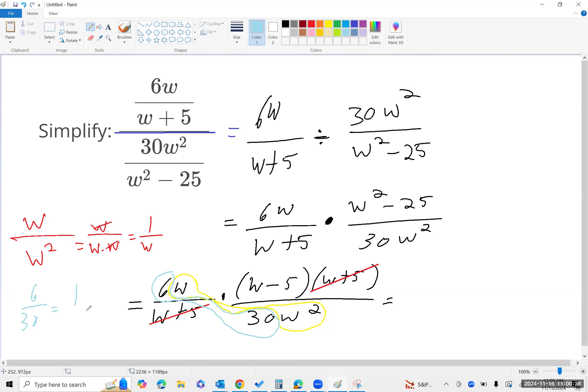Six goes into six once, six goes into 30 five times. Okay, so using all that information, I have this one-fifth thing, I have this one over w piece, and then the w plus 5 is canceled. I'm left with w minus 5.